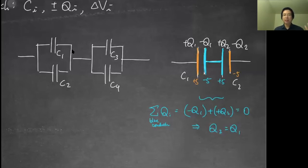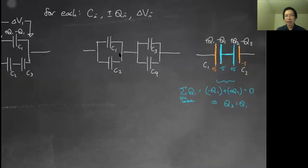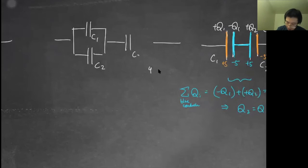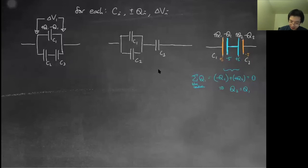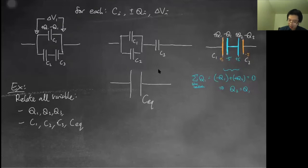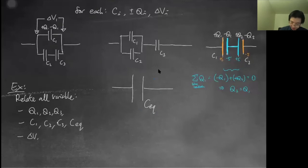For example, c1 might be in parallel with c2, but they're not in parallel or series with c3. So if I ask you to relate c1 and c3, you can't do it by memorized rules. But with this understanding, you can. So let me make up a question — I'll simplify to one capacitor on one side — and the exercise is to relate all the variables: q1, q2, q3, and q-equivalent for two configurations.